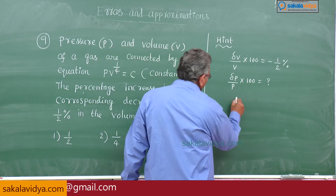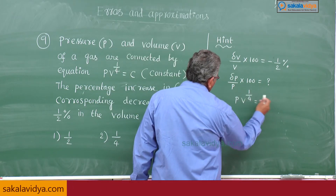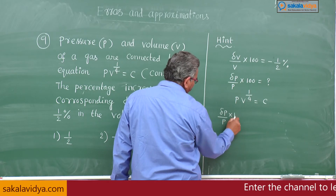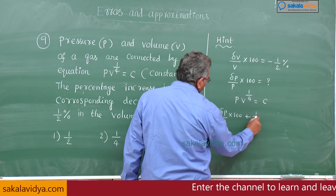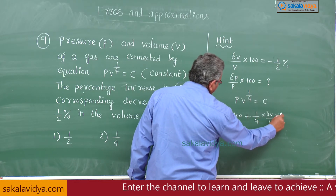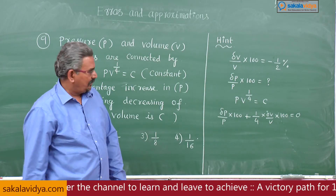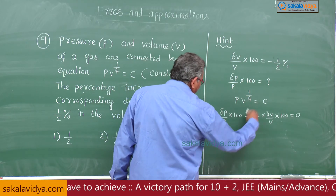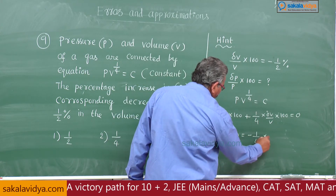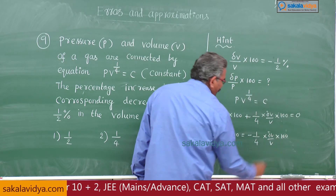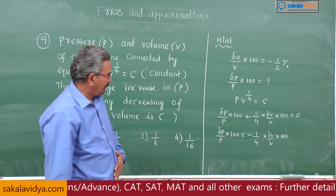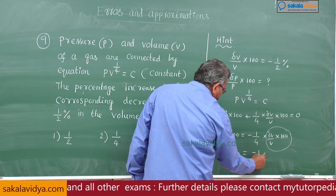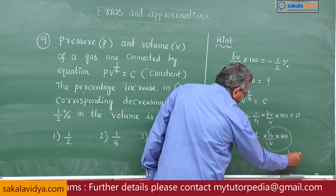We have the relation p v to the power of 1 by 4 equals constant. The dimension of p is 1, so we can write: delta p by p into 100 plus 1 by 4 into delta v by v into 100 equals 0. Therefore delta p by p into 100 equals negative 1 by 4 into delta v by v into 100, which is minus 1 by 4 into minus half, giving 1 by 8 percent increase.